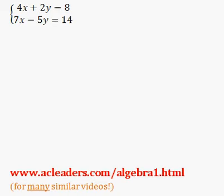4x plus 2y equals 8, 7x minus 5y equals 14. Let's solve the system by substitution.